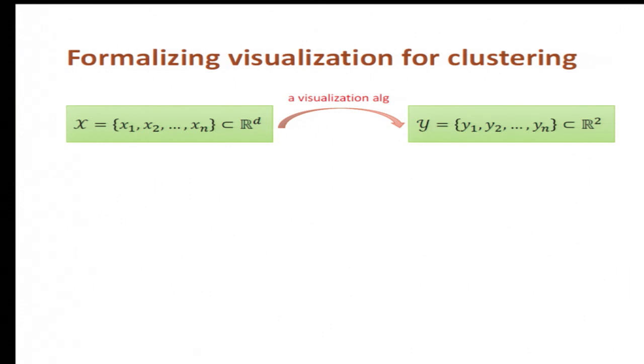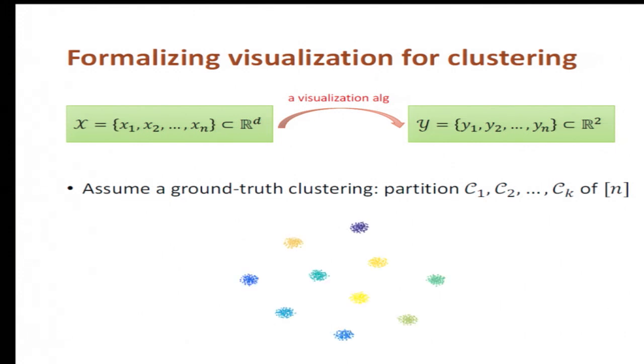So now let's see what we can prove about t-SNE. In this work, we only focus on clustering. And first, we need to define a criterion to prove. So we need to assume that there exists some ground truth clustering in the data, which is just a partition of the n data points into k clusters.